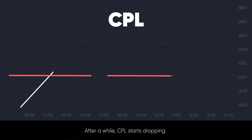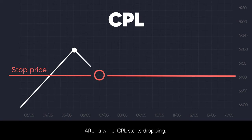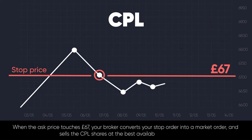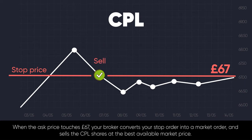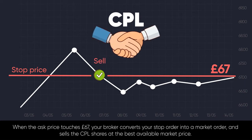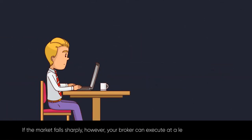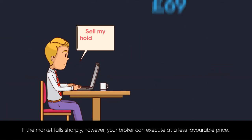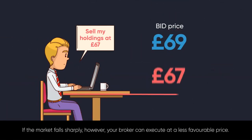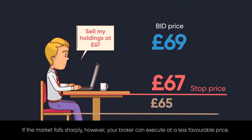After a while, CPL starts dropping. When the ask price touches £67, your broker converts your stop order into a market order and sells the CPL shares at the best price available in the market. If the market falls sharply, however, your broker can execute at a less favourable price.